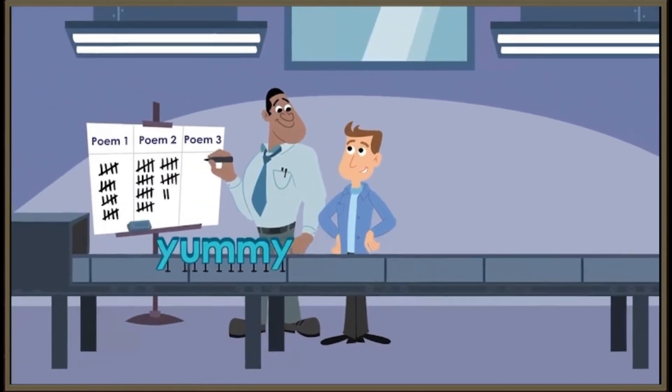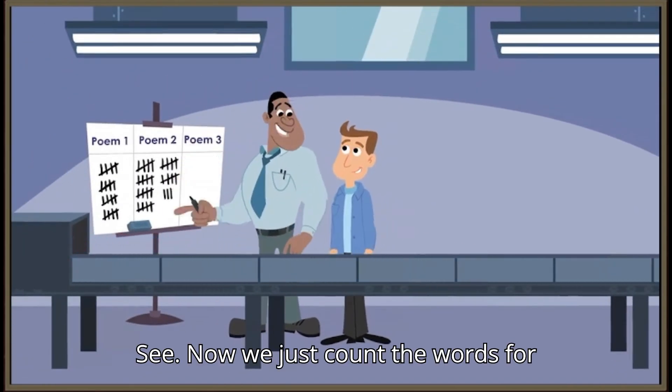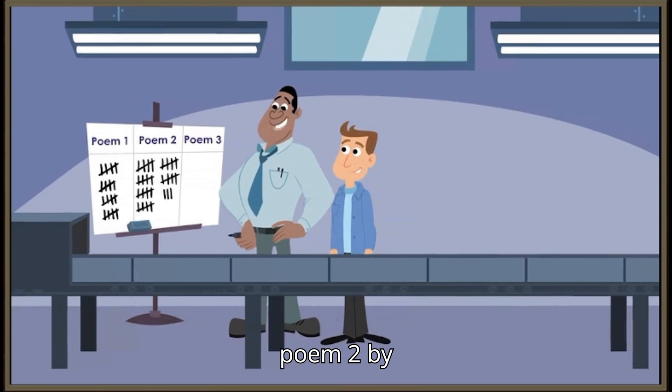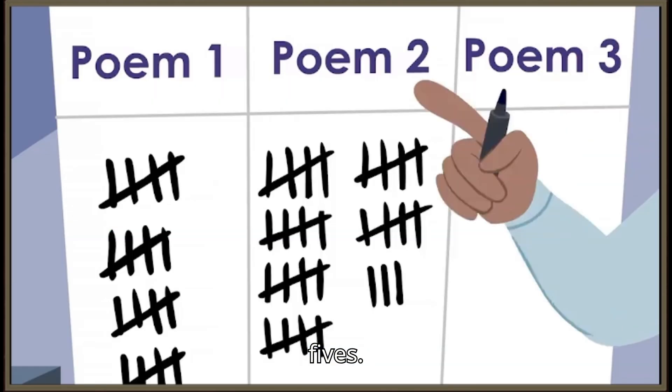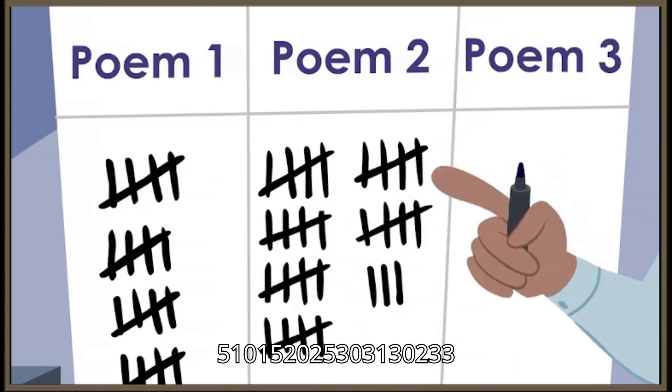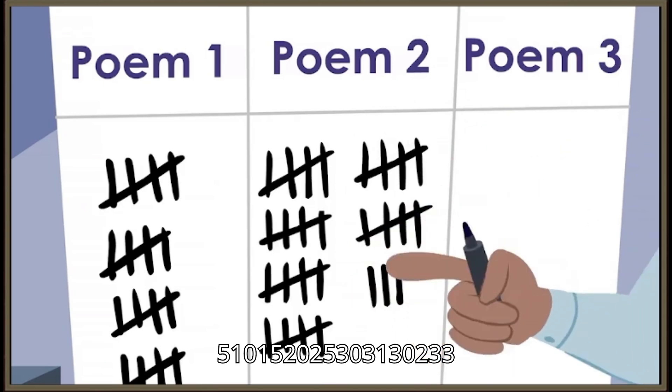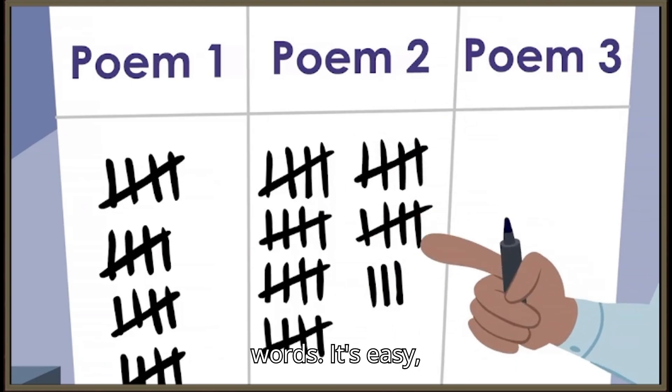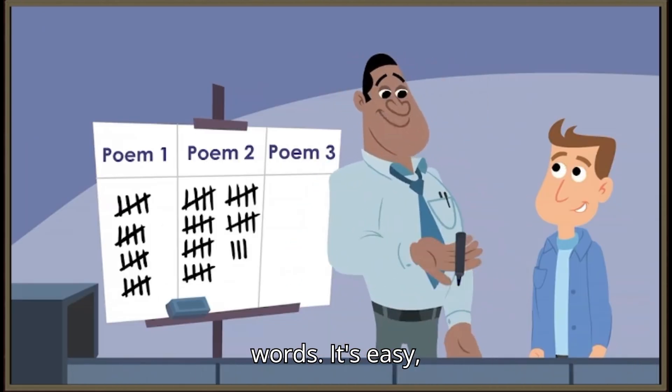See? Now we just count the words for poem two by fives. Five, ten, fifteen, twenty, twenty-five, thirty, thirty-one, thirty-two, thirty-three words. It's easy. You'll see.